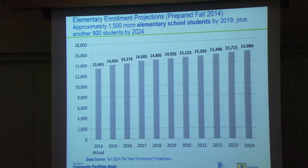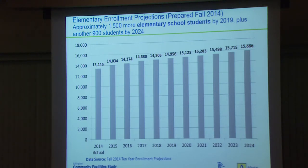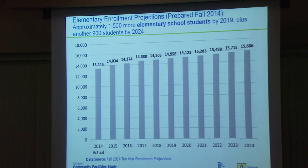Let's break it out. Elementary enrollment projections start at about 13,400 and rise — approximately 1,500 more elementary students over the first five years by 2019. Our average elementary school in Arlington is about 530 seats, and our new preferred maximum school size is 725 seats. 1,500 more elementary students in the next five years — the numbers suggest we'll need at least two schools.